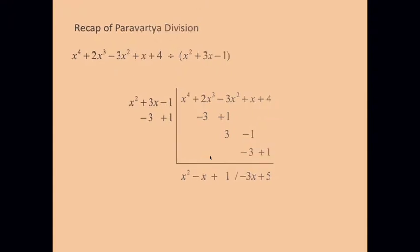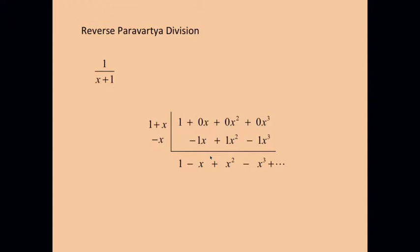The reverse version of Paravartya, the backwards version so to speak, we'll have a look at 1 divided by x + 1 and we can treat this as 1 divided by 1 + x of course and here the dividend 1 is written as 1 + 0x + 0x² and so on. And here, transposing the +x into -x, 1 divided into 1 gives 1 and then 1 times -x gives -1x in the second column. Add up and divide by 1, and then multiply -x times -x gives +1x².